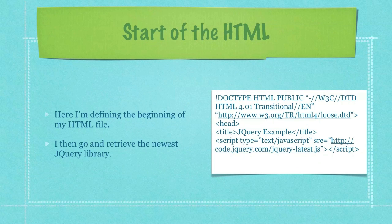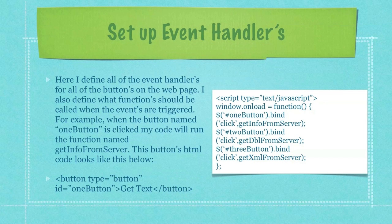This is the actual HTML and jQuery code. Here I'm defining the beginning of my HTML file, then I go and retrieve the newest jQuery library. You can hit pause on the screen to write this down, or go to newthinktank.com and download all of this code for free. Here I define all the event handlers for all the buttons on the web page and the functions that should be called when the events are triggered. For example, when the button named 'one button' is clicked, my code will run the function named get info from server. You can see this button's HTML code down in the lower left-hand side of your screen.